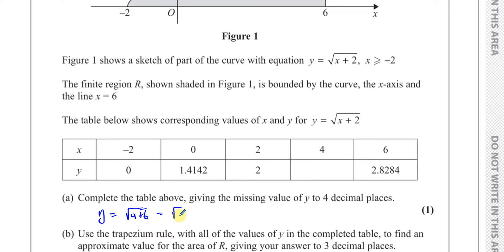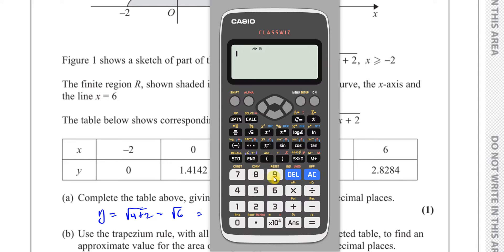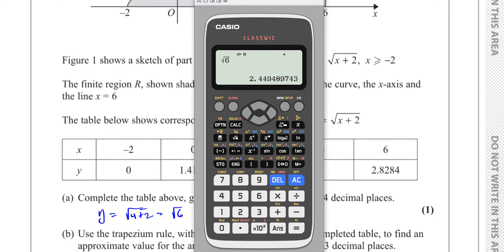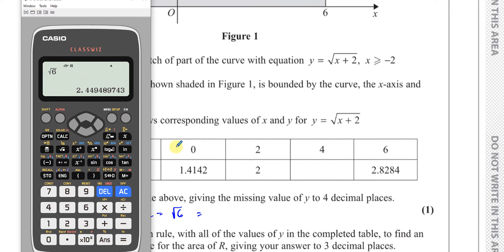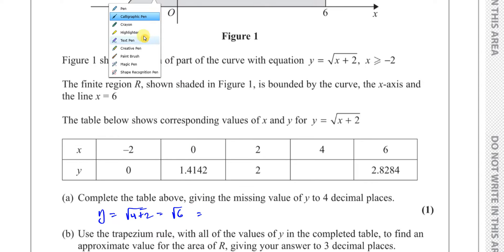Substituting x equals four gives us the square root of four plus two, which is the square root of six. Using a calculator and pressing the SD button, we get 2.44948... To four decimal places — one, two, three, four — that rounds to 2.4495.